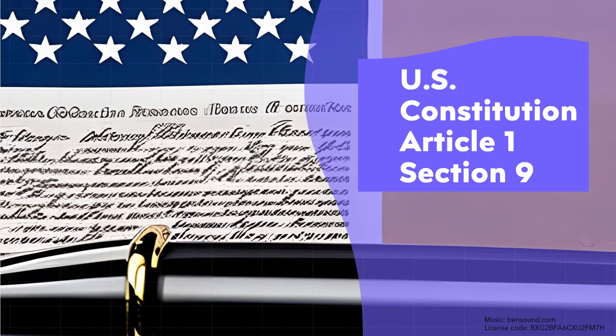Today we're going to go over Article 1, Section 9. This section, overall, covers the things Congress is limited by, unlike the last section, which were all of their powers.